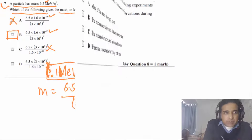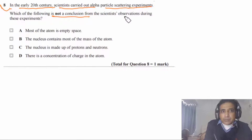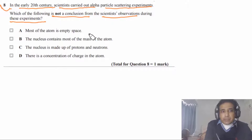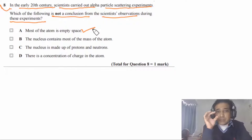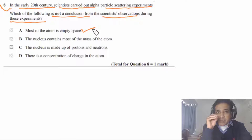Question 8 asks which is NOT a conclusion from the alpha particle scattering experiment. Most of the atom is empty space — correct, because most alpha particles passed straight through. The nucleus contains most of the mass — correct, because few particles bounced back, showing mass is concentrated in a tiny space.